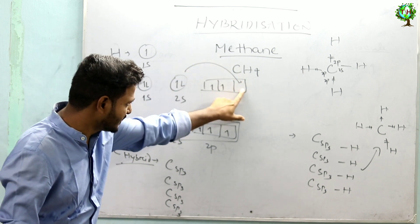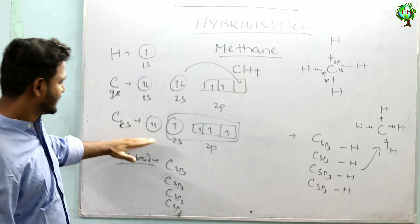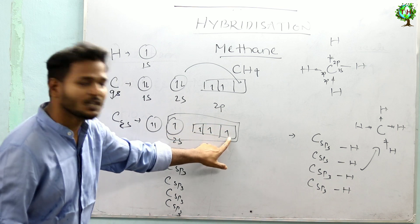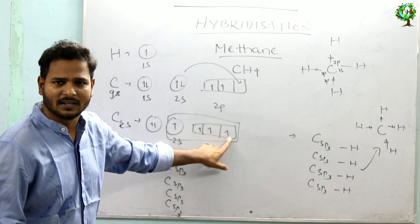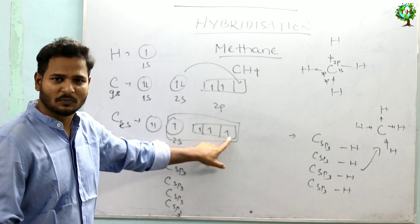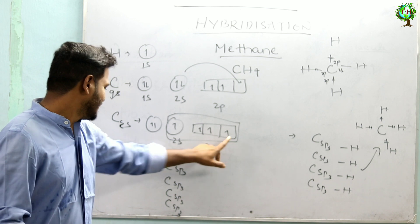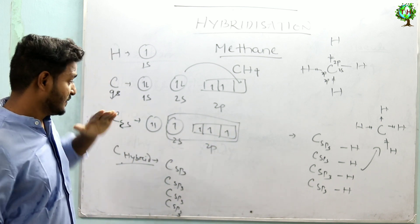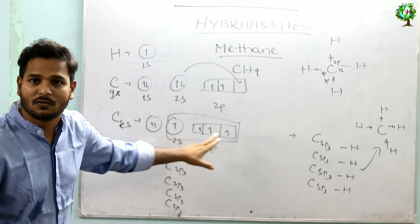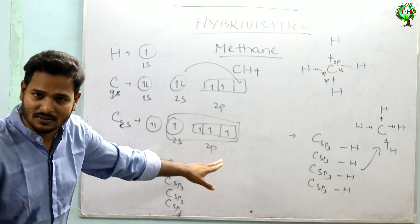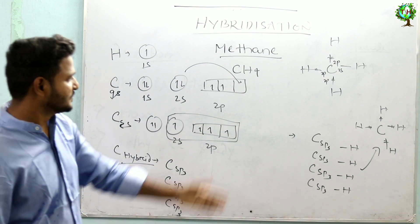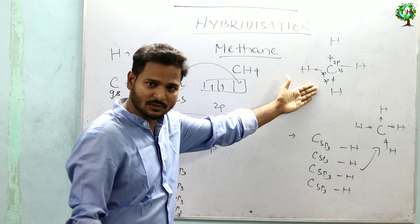That electron is excited — so in the excited state, that electron jumps to the 2p orbital: 2px, 2py, 2pz. Now it has 4 unpaired electrons, so you can make 4 C-H bonds.